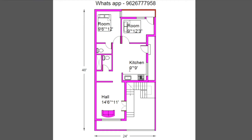Next is the kitchen. The size is 9 feet by 9 feet. We can place the kitchen here — here is the gas tower, here is the sink. We can place the gas tower here as well.